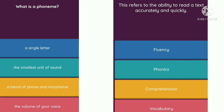Question 6: What is a phoneme? Option A — single letter. Option B — smallest unit of sound. Option C — a blend of phoneme and morpheme. Option D — the volume of your voice. The correct answer is option B, smallest unit of sound.